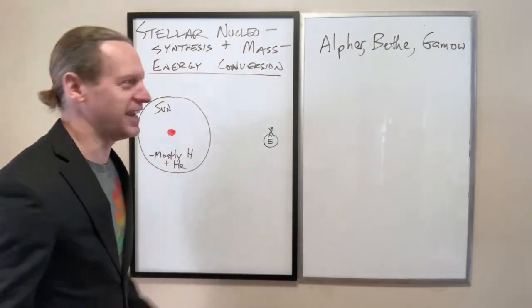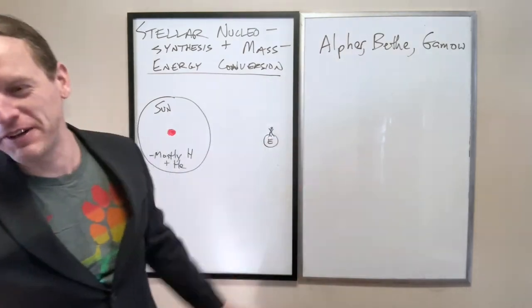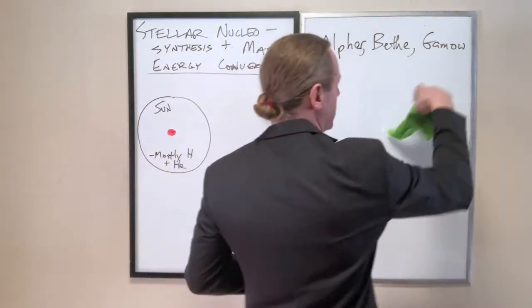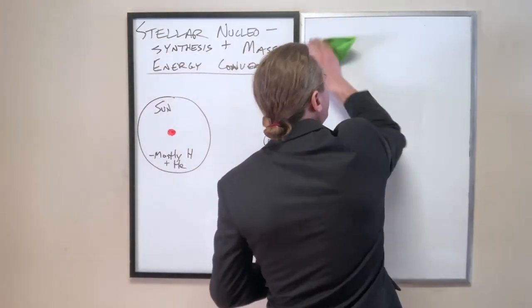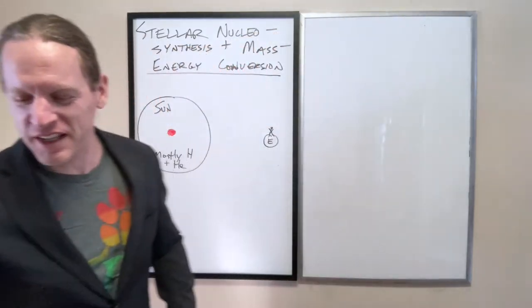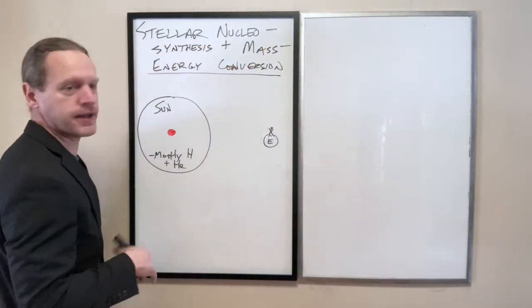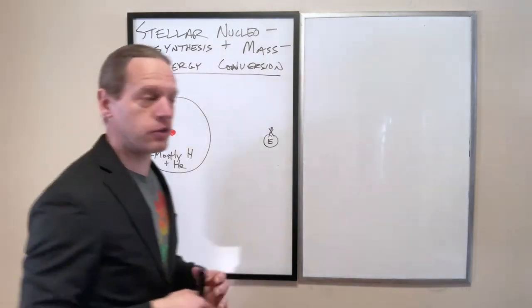So they literally just had their friend sign on for Alpher just to get the first three letters of the Greek alphabet, Alpher, Beta, and Gamow. And so still to this day, I don't think Alpher was involved in the Nobel, but Bethe received his. So we'll get into that in a moment. But the most important thing is that the way that the sun produces its energy, they realize, is that through the process of nuclear fusion.